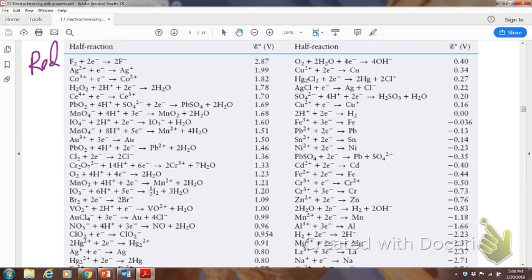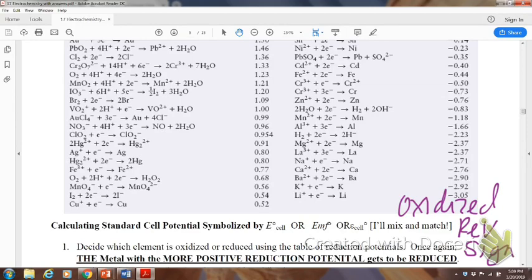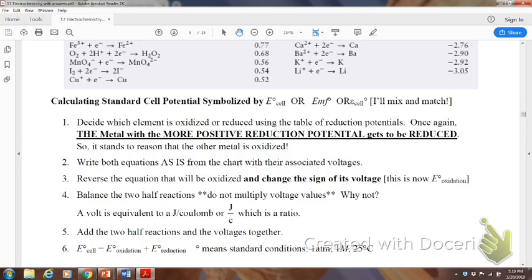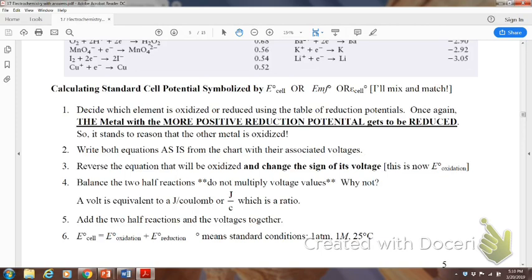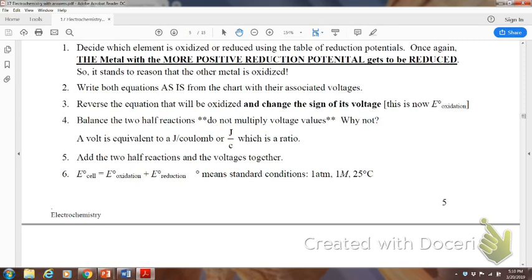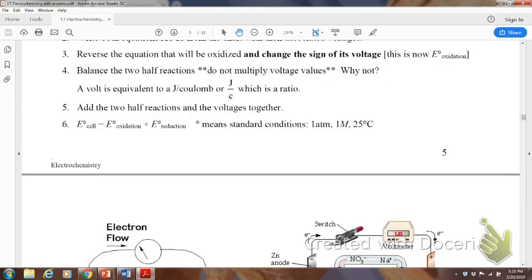I got ahead of myself. Sorry. It's written down there below the reduction potential. And then, of course, these are the most likely to be oxidized down here. And if we oxidize them, we're going to reverse the sign. So, here we have what I just said. Basically, you reverse the equation, but not multiplying it. Why not? Because the volt is the equivalent to a joule per coulomb, which is a ratio. And then, once you figure out what's going to be oxidized and what's going to be reduced, you add them together. So, this is what we do right here. We're going to add those together. And again, reminding you that the NOT means at standard conditions.